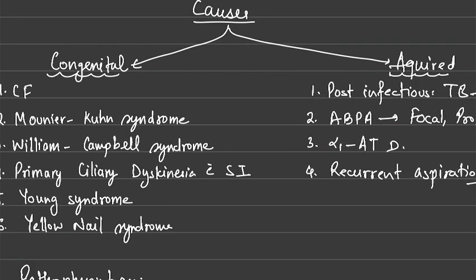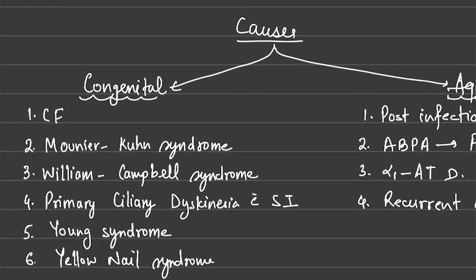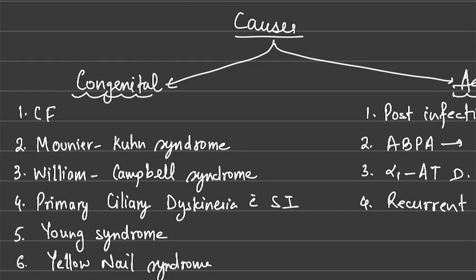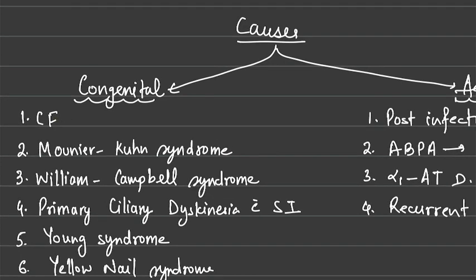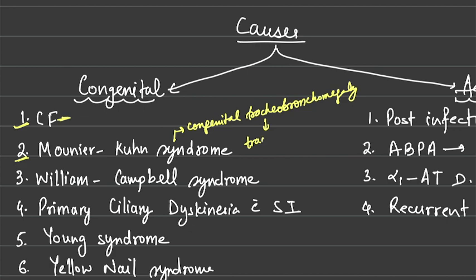The causes of bronchiectasis include congenital and acquired causes. In congenital causes, the most common is cystic fibrosis. The second is Mounier-Kühn syndrome, in which there is congenital tracheobronchomegaly, which eventually leads to tracheobronchomalacia.